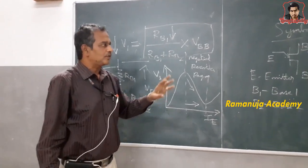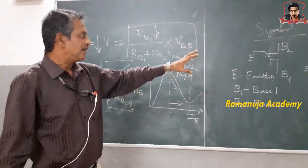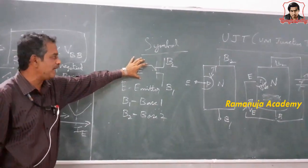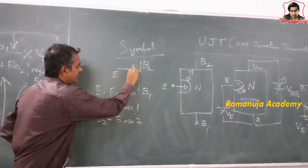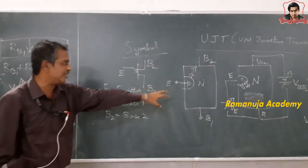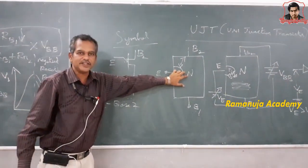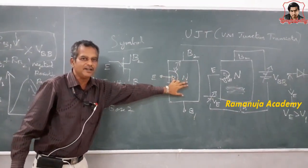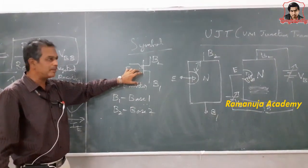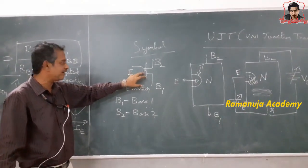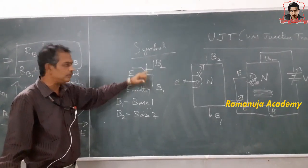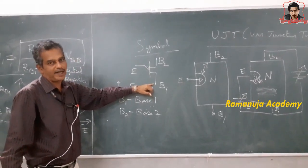The formula RB1 divided by (RB1 + RB2) multiplied by VBB is called the intrinsic standoff ratio, denoted by the symbol η. To summarize: as the name suggests, the unijunction transistor has only one junction between the P region and the N region. When drawing the symbol, the emitter must be shown closer to base 2 than to base 1.